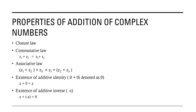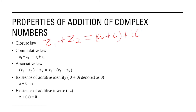Now we will see what are the various properties of addition of complex numbers. The first one is the closure law. According to this law, when we add two complex numbers the result is also a complex number. We just saw that when we have z1 and z2, the sum z1 plus z2 equals a plus c plus i into b plus d, which is again a complex number. This is called the closure law.